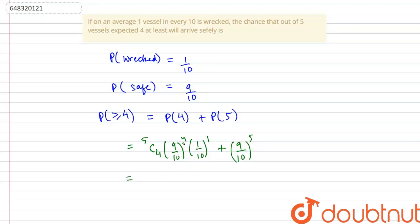We can simplify this and take 9 to the power of 4 common. So we would have 9 to the power of 4 and here we would have 5C4 that is 5, 5 into 1 which is also 5 plus 9 by 10.